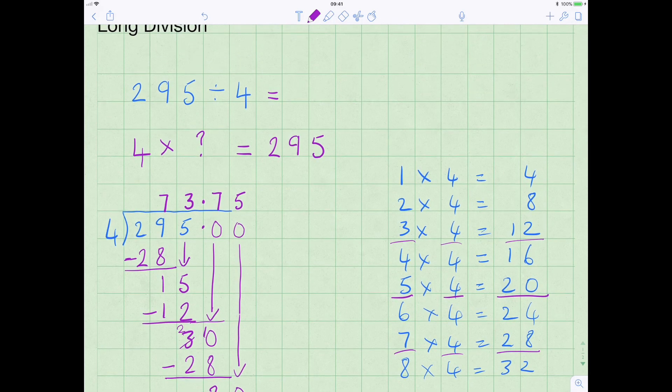So the answer to the question 295 divided by 4 equals 73.75. 4 times 73, and I've got to squish that in a bit, 73.75 equals 295.